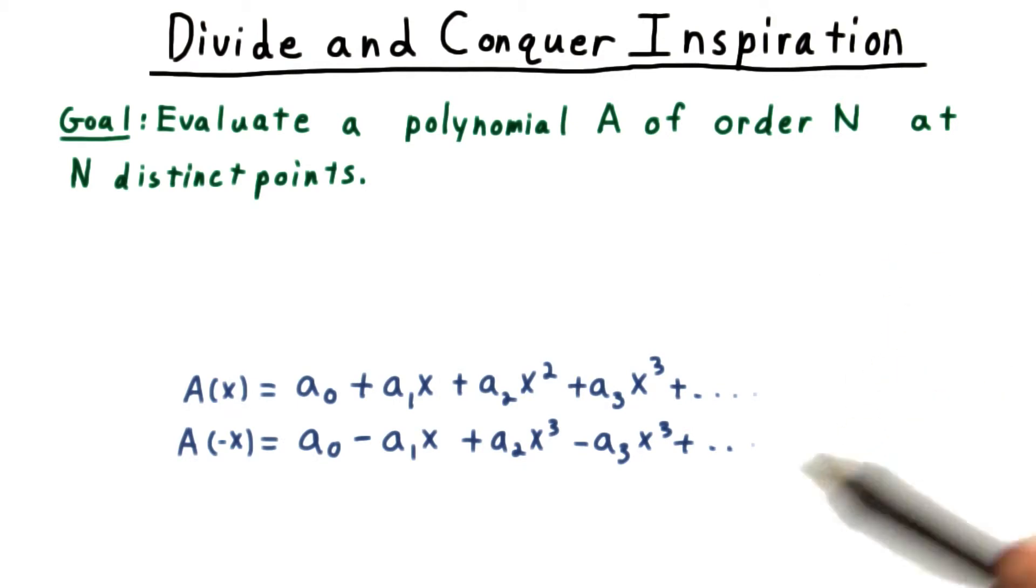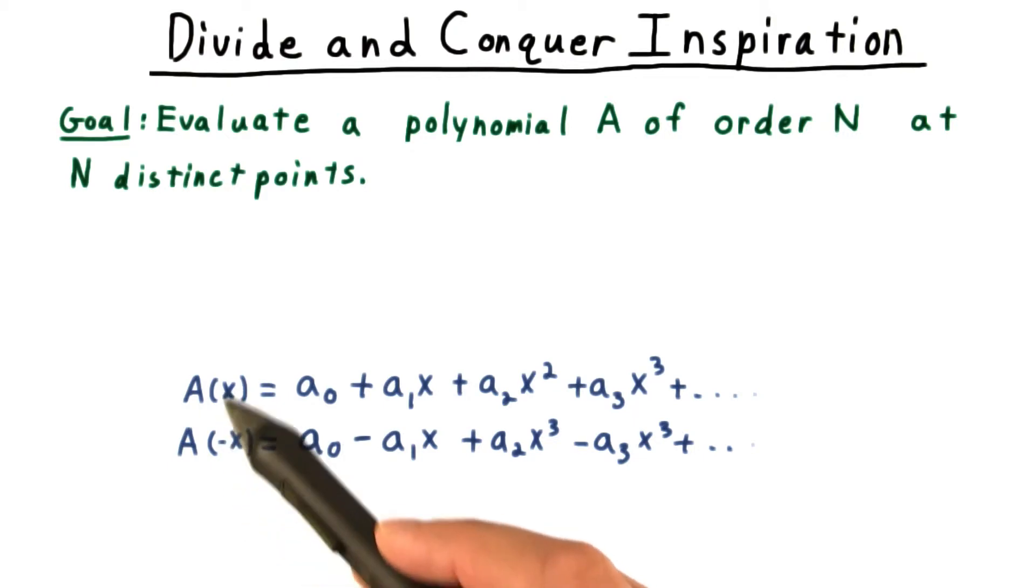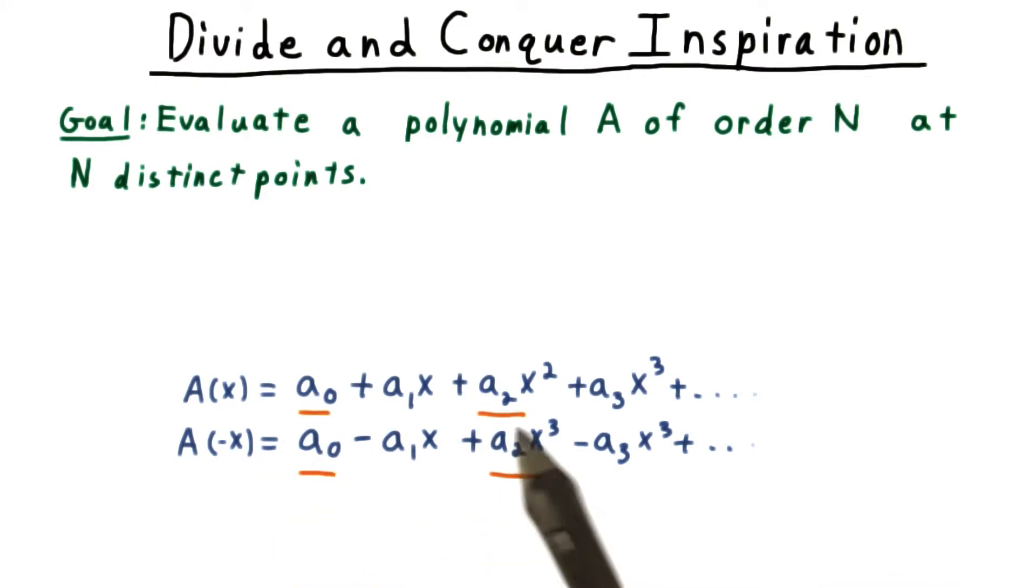As you did the calculation for the exercise, you may have taken advantage of the fact that the input values were arranged in positive and negative pairs. For higher order polynomials, this advantage becomes even greater. All the even terms are the same for x and negative x, and the odd terms are just negatives of each other.